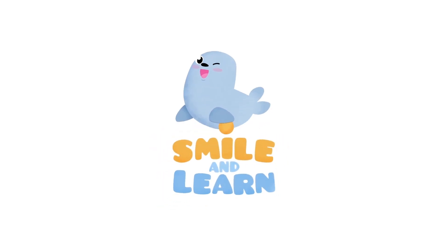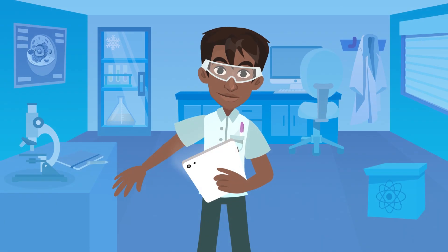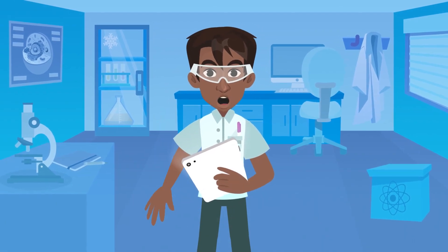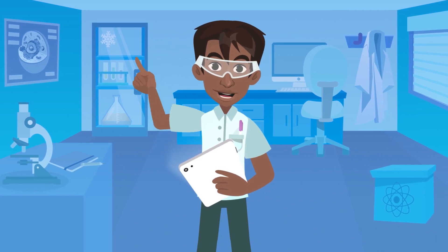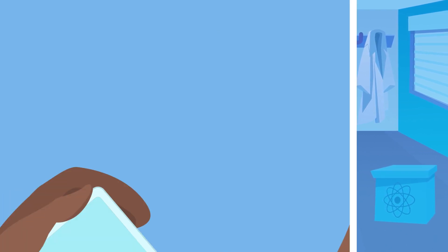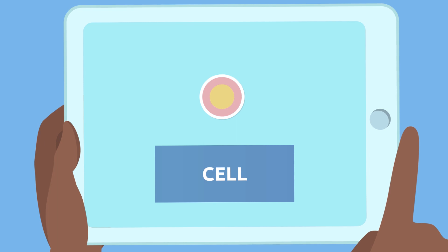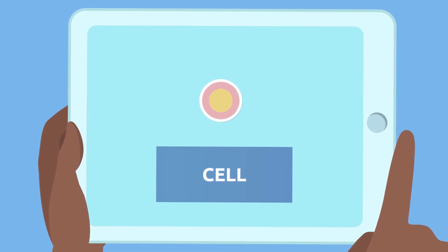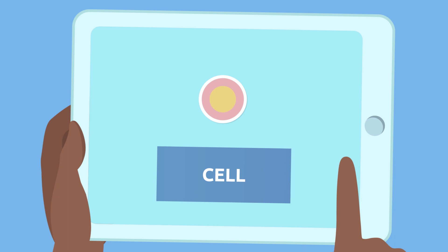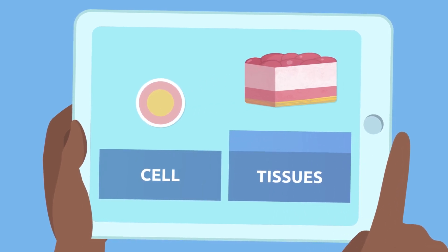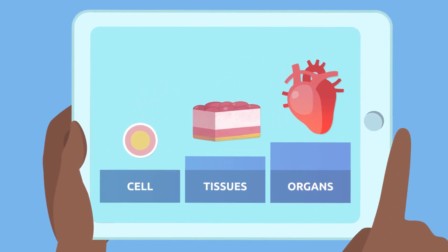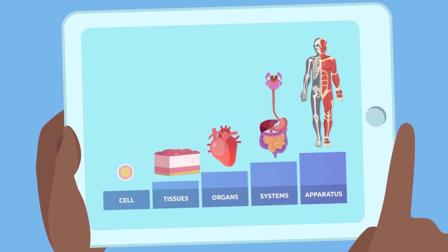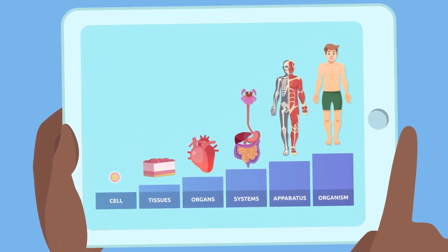Smile and Learn! Hey friends, today we're going to take a super interesting journey inside living beings. First we'll start with the cell, which is the smallest basic unit that can live on its own, and bit by bit we'll go through tissues, organs, systems, apparatuses, and finally the organism.